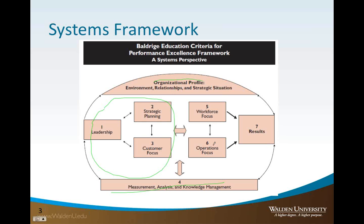The three categories on the right-hand side form the results triad, encompassing a workforce focus — your own capability, capacity, satisfaction, and engagement — a focus on operations and key work processes for teaching and learning, and finally results. Notice that all of our actions point toward results: student learning outcomes, customer-focused outcomes, workforce-focused outcomes, the university's leadership and governance system, budget and market results — everything culminates in Category 7 results.